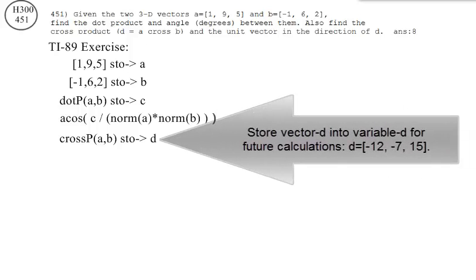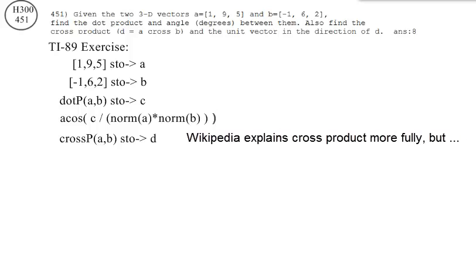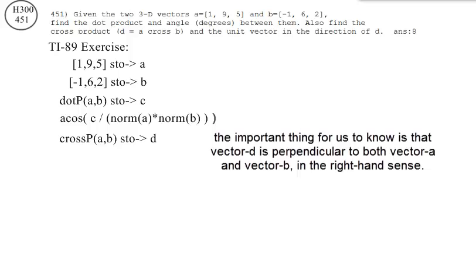Store vector D into variable D for future calculations. Cross product is useful in 3D torque problems. The important thing to know is that vector D is perpendicular to both vector A and vector B in the right-hand sense.